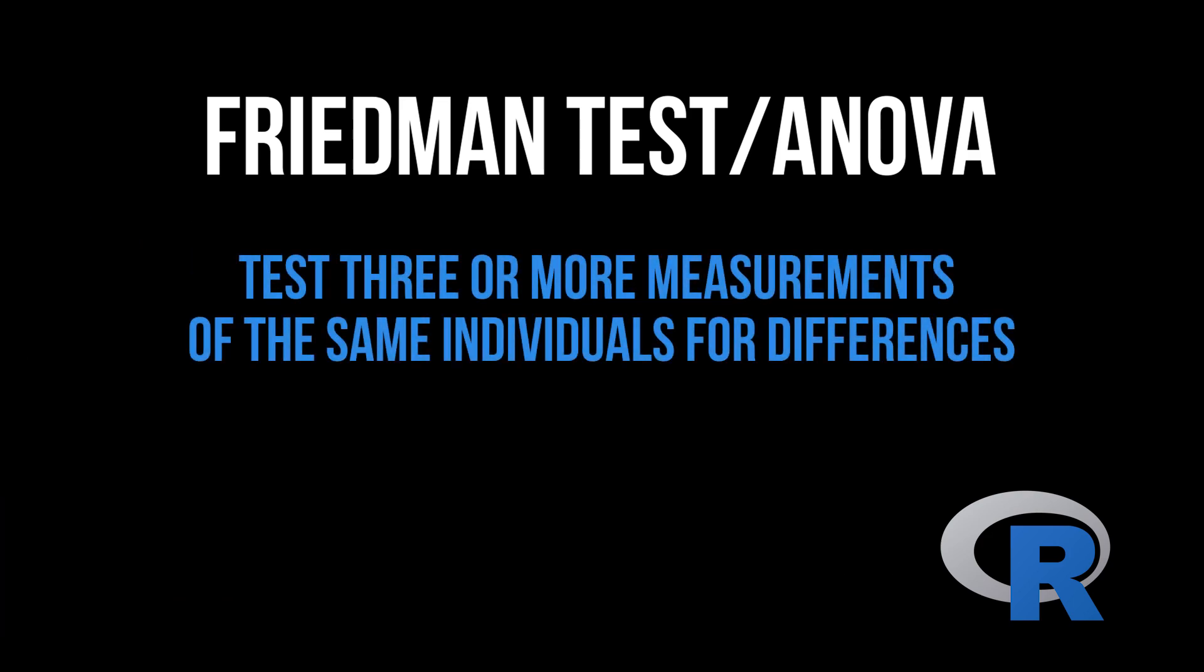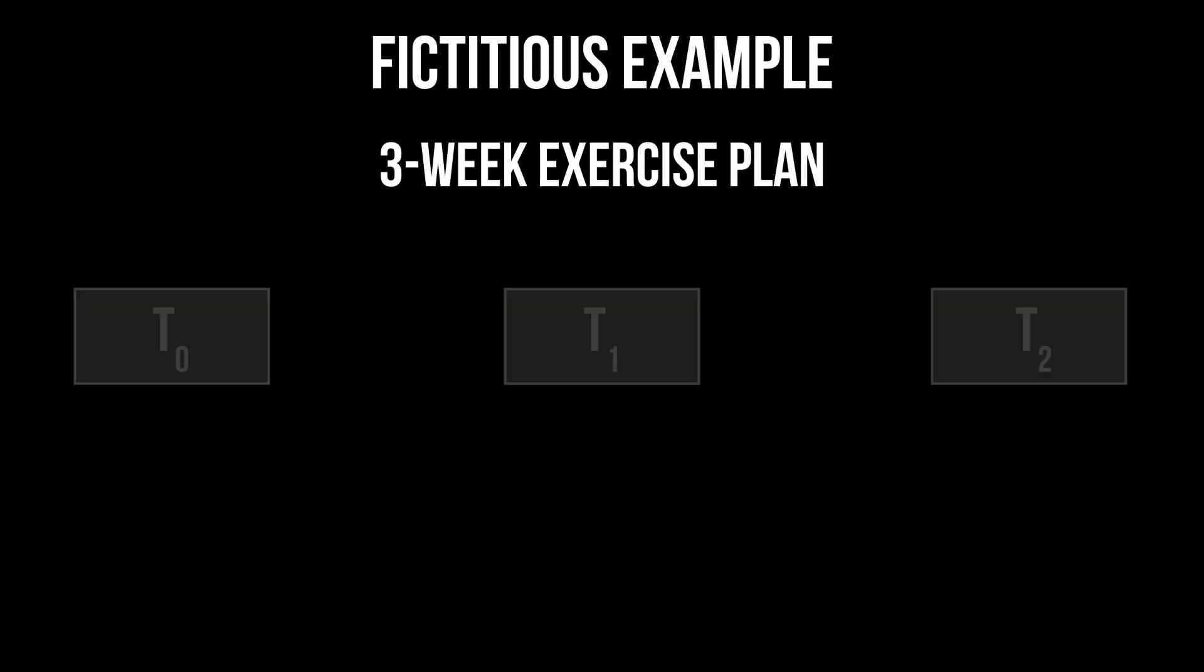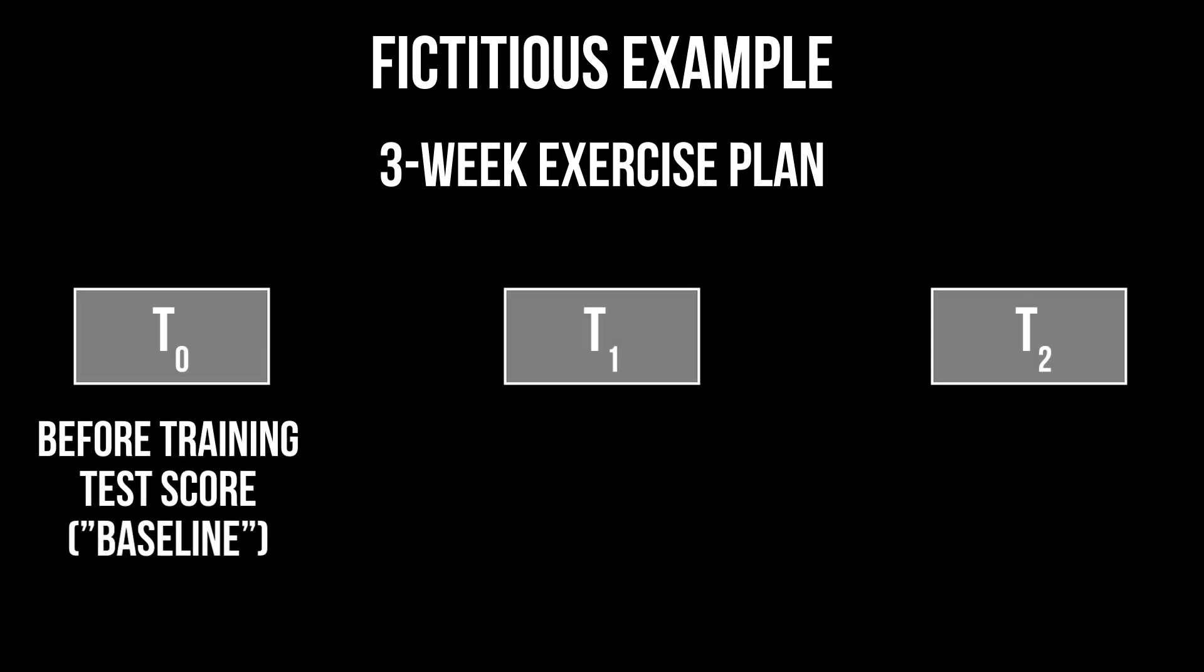Its purpose is testing the medians of the same or related individuals at 3 or more points in time for differences. For example, I want to see how good a 3-week exercise plan performs. That means before implementation, I record the physical condition in some form of a test score.